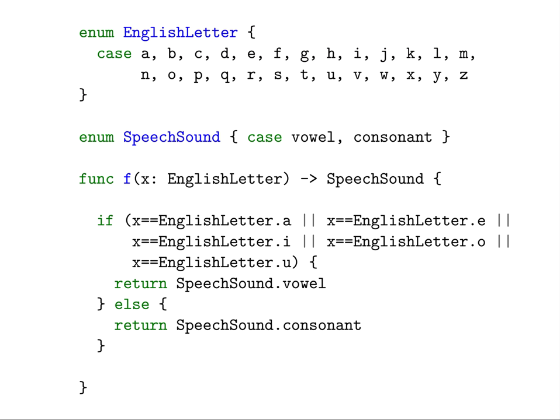This code checks to see if x is the English letter A, or the English letter E, or the English letter I, or the English letter O, or the English letter U. If x is any of these values, the function returns the value vowel. Otherwise, the function returns the value consonant.